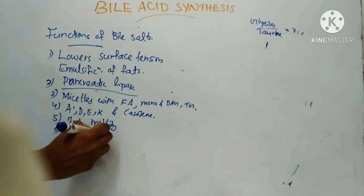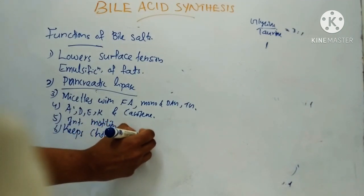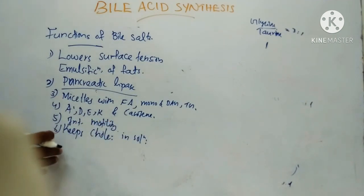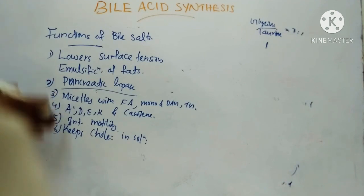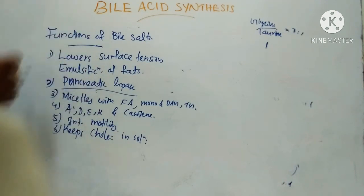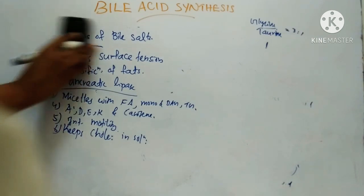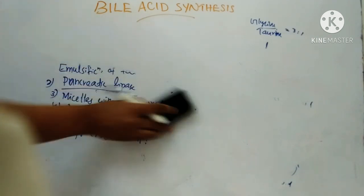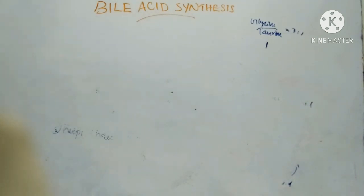They help in the absorption of fat-soluble vitamins A, D, E, and K, and also for the absorption of carotene. They stimulate intestinal motility. Bile salts also keep cholesterol in solution — cholesterol remains soluble in the gallbladder or bile due to bile salts. These are the functions of bile salts and this concludes the topic of bile acid synthesis.